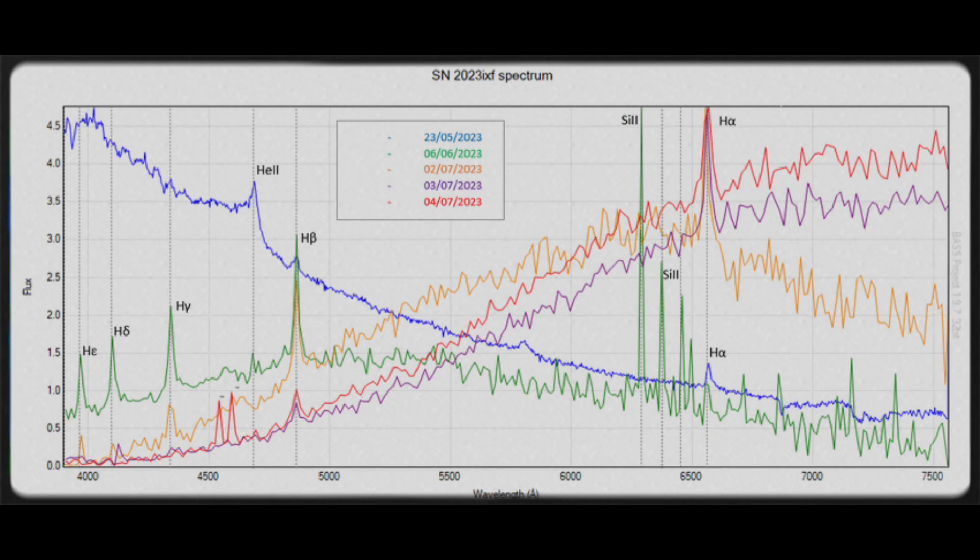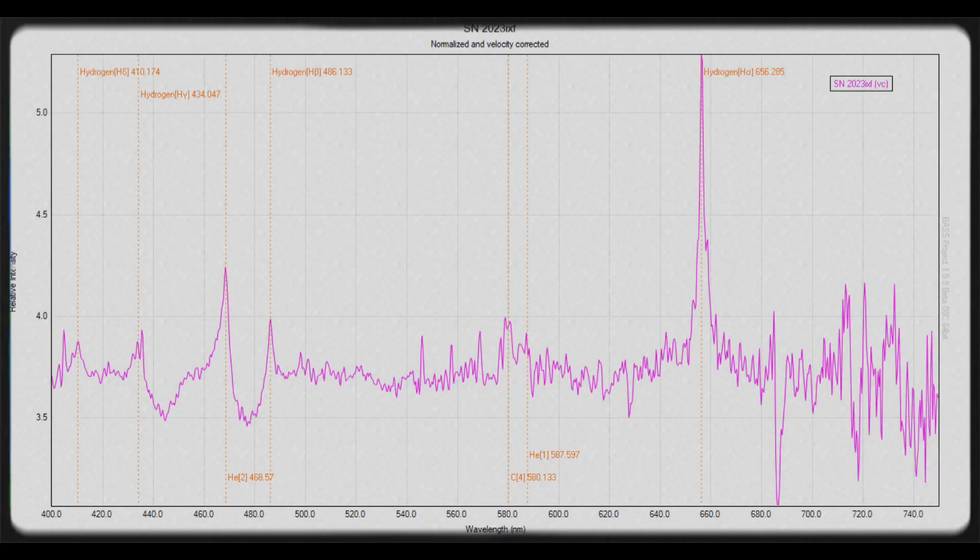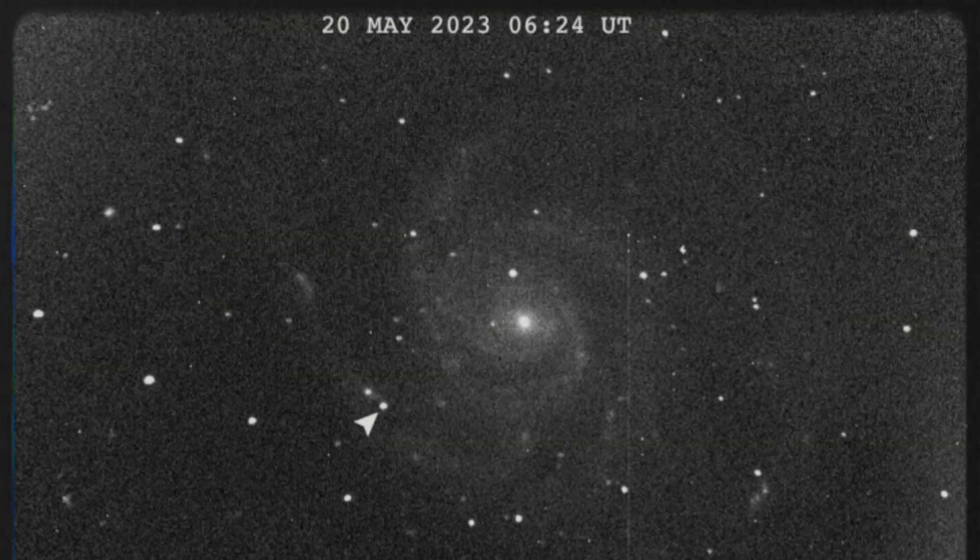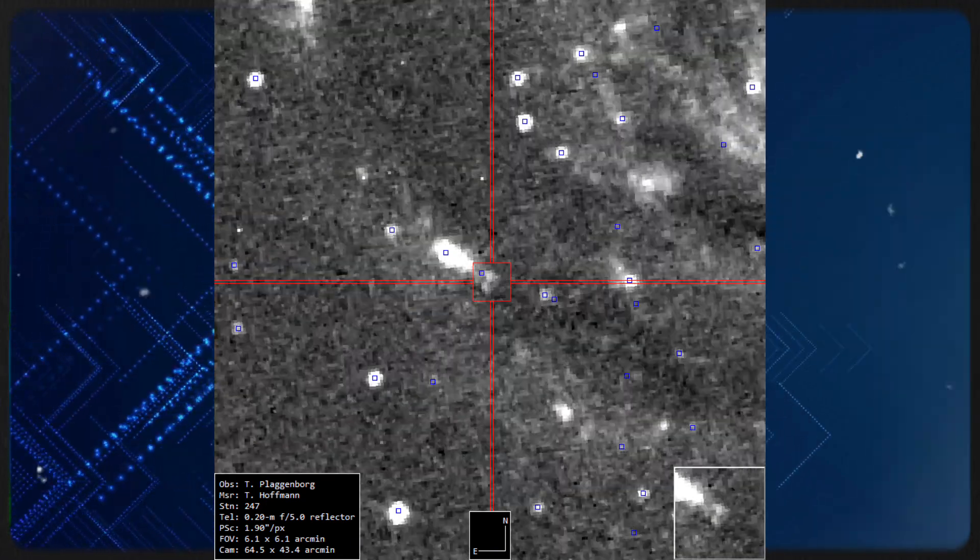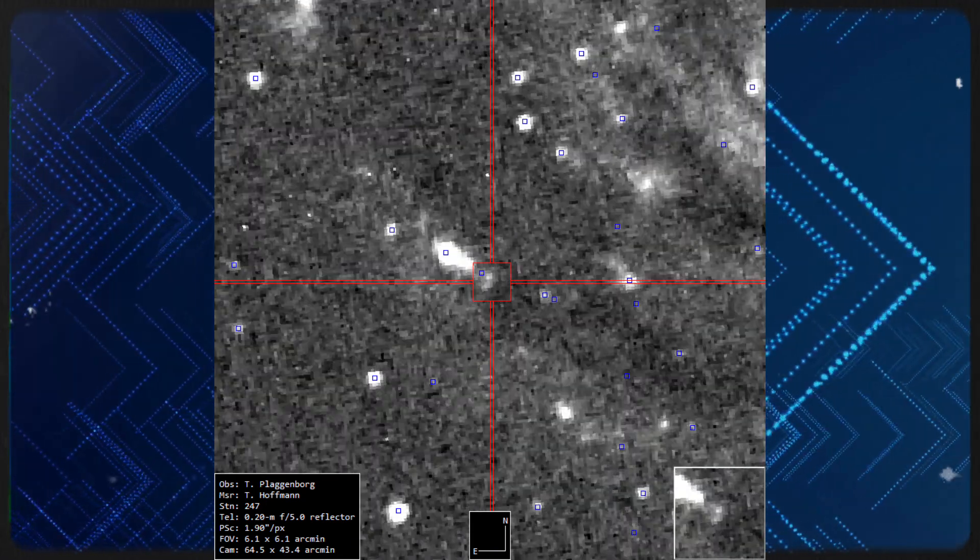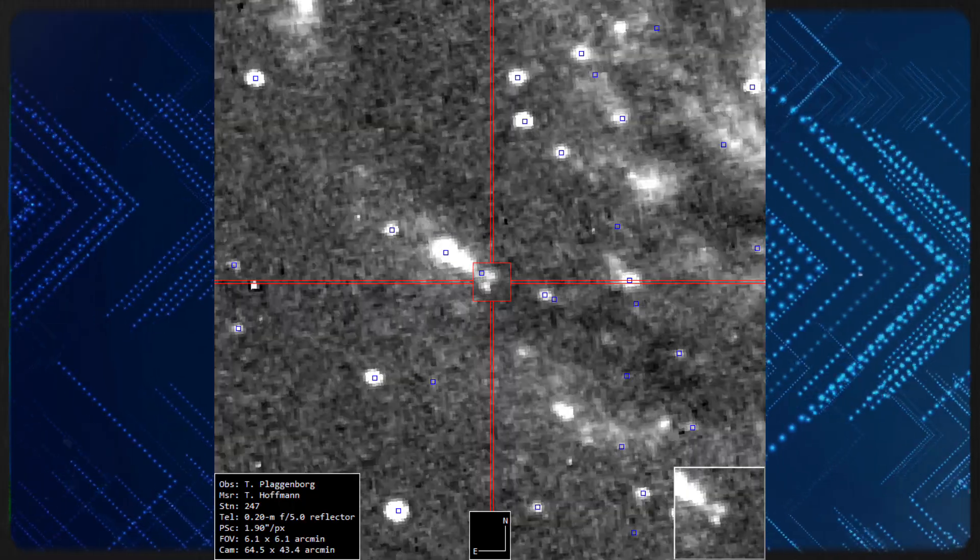Spectroscopic analysis of SN2023EXF revealed several bright emission lines, showcasing the intense interactions between the supernova's expanding shockwave and the gas surrounding it. This wasn't merely the end of a star. It was the collapse of a massive star, succumbing to its own gravity after exhausting its nuclear fuel, resulting in a stunning core-collapse supernova.